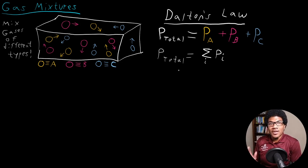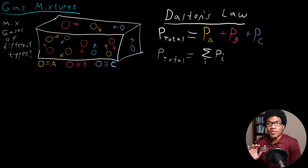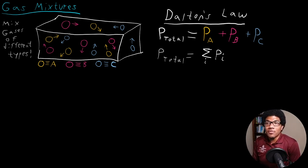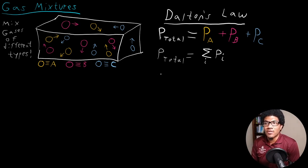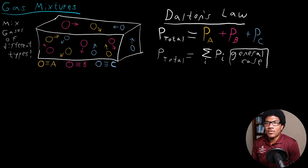Everything said so far is general enough that we don't have to make any assumptions about the gas model — we haven't said whether it's an ideal gas or any other type. All we've noted is that each gas will have its own pressure equation. Now let's make the assumption that we have an ideal gas. The equation up top is for just three molecules; the general case covers any number of gas particles in the mixture.